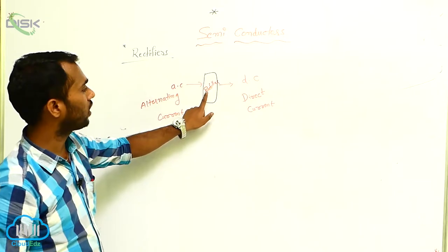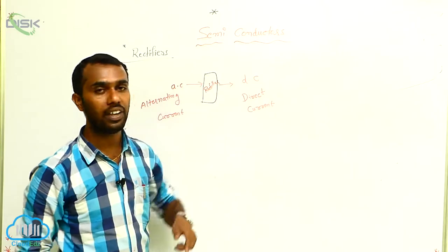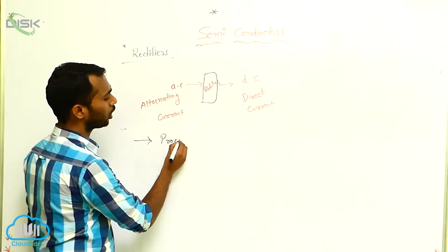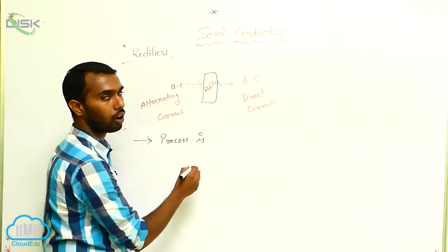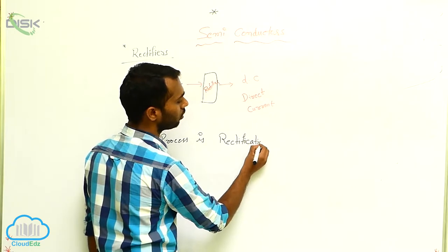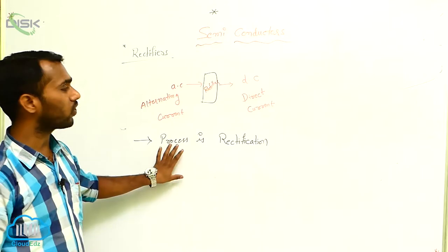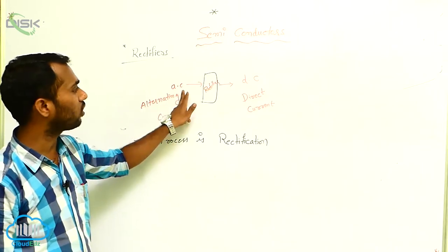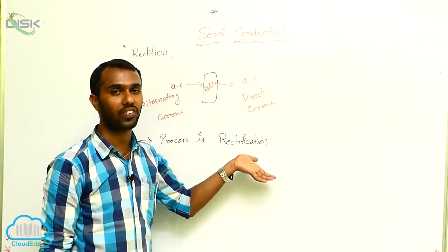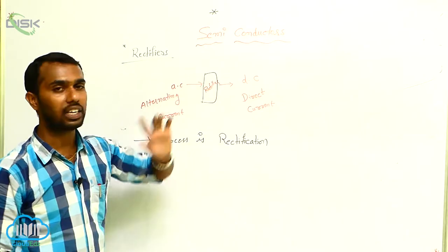What is a rectifier? A rectifier is an electronic device that converts AC current into DC current. That process is called rectification. What is rectification? The process of converting AC into DC is called rectification. For this rectification process, we require a device. That device is called a rectifier.